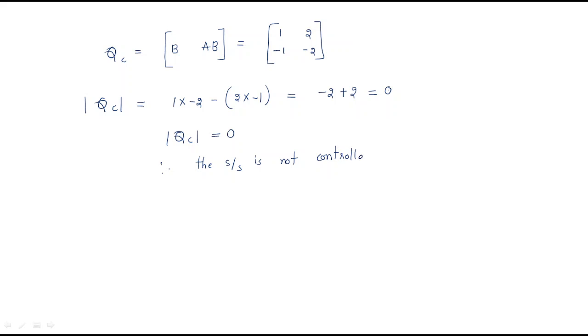Whenever the determinant of the controllable matrix QC becomes 0, the system is not controllable. If it is not equal to 0 then it is controllable. So this system is not controllable.